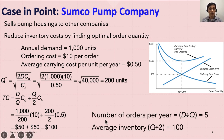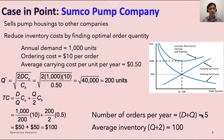The number of orders per year equals annual demand divided by EOQ: 1,000 divided by 200 gives 5 orders per year. Average inventory is Q over 2, so 200 divided by 2 equals 100 units. Once you calculate EOQ, you can derive various useful inventory metrics.